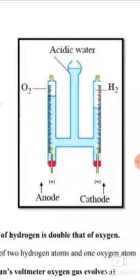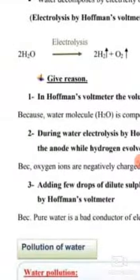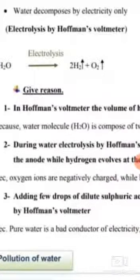The hydrogen gas is double the amount of oxygen because water structure contains two atoms of hydrogen and one atom of oxygen. So the amount of hydrogen is double the amount of oxygen.